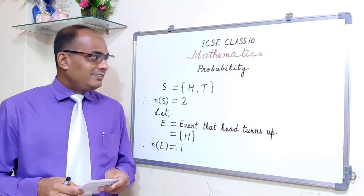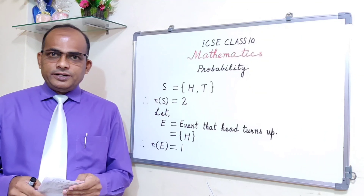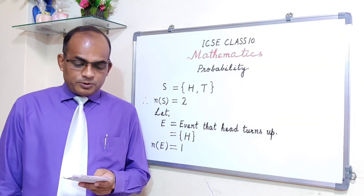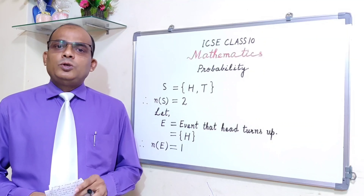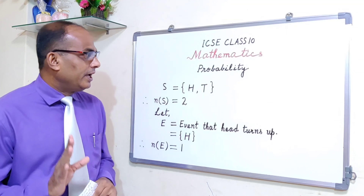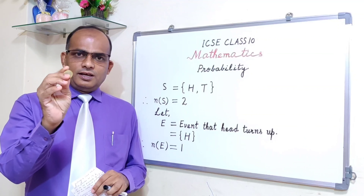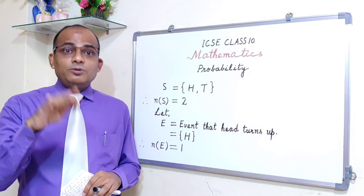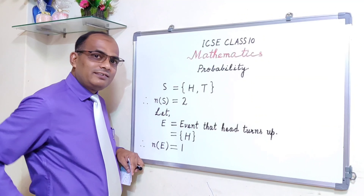Let's take a question: an unbiased coin is tossed, find the probability of getting a head. That is the question. When we toss a coin, one side is head and the other side is tail. When you toss a coin, the possible outcomes are head or tail.